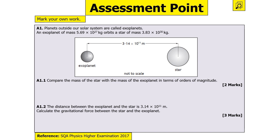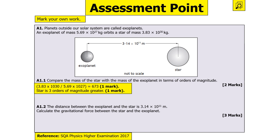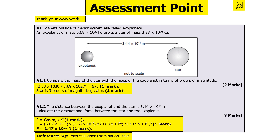To compare masses: 3.83 × 10³⁰ / 5.69 × 10²⁷ = 673, so the star is about three orders of magnitude more massive (since 10³⁰/10²⁷ = 10³). Using F = GMm/R², remember to square R, giving F = 1.47 × 10²⁵ N.